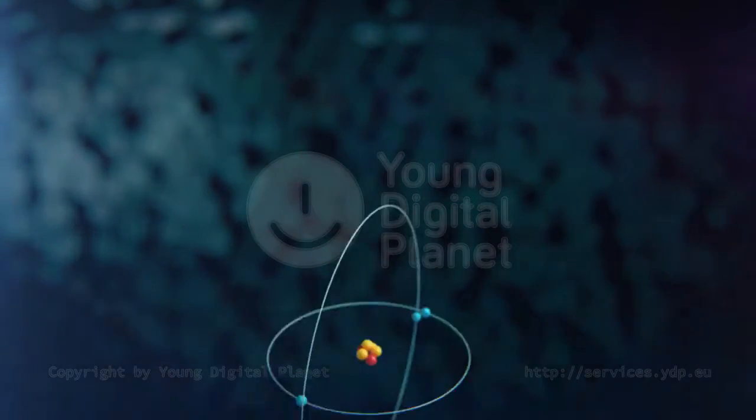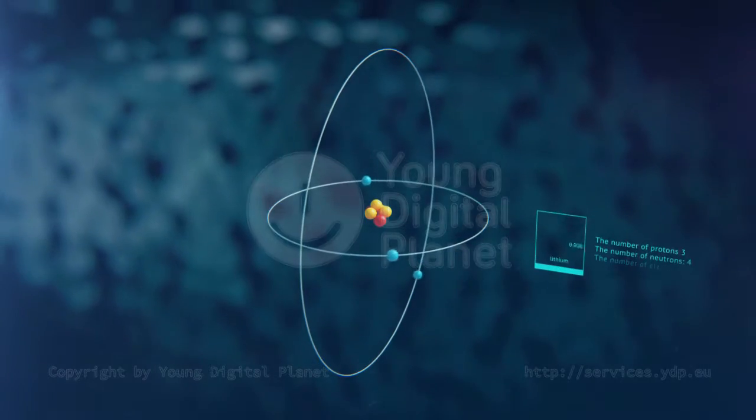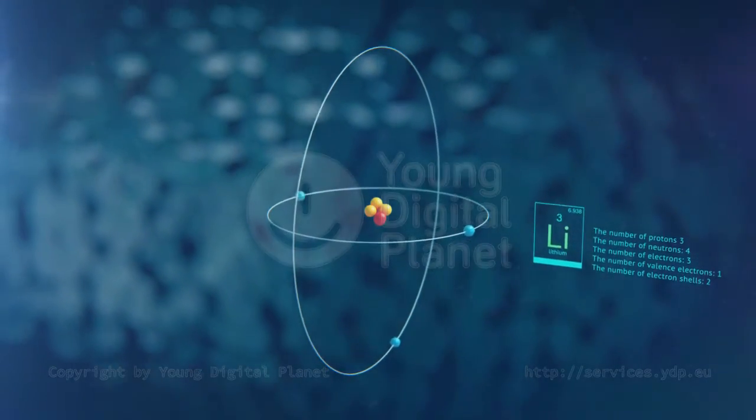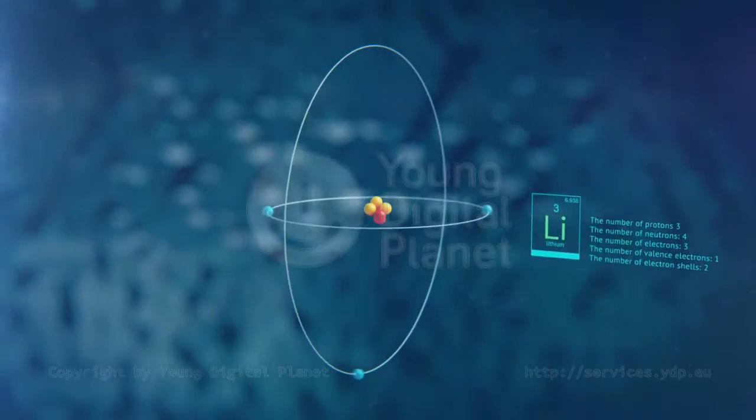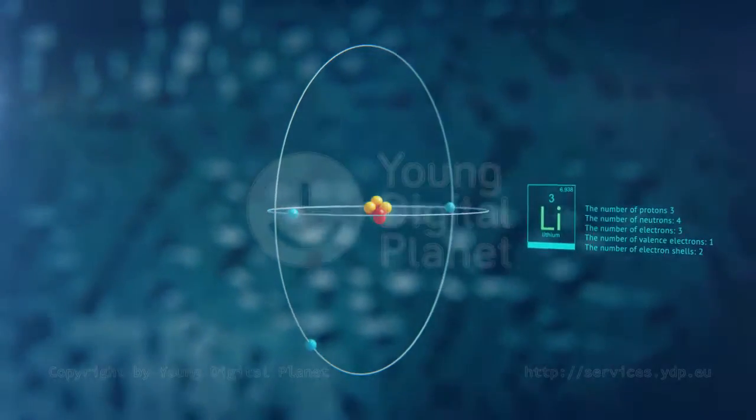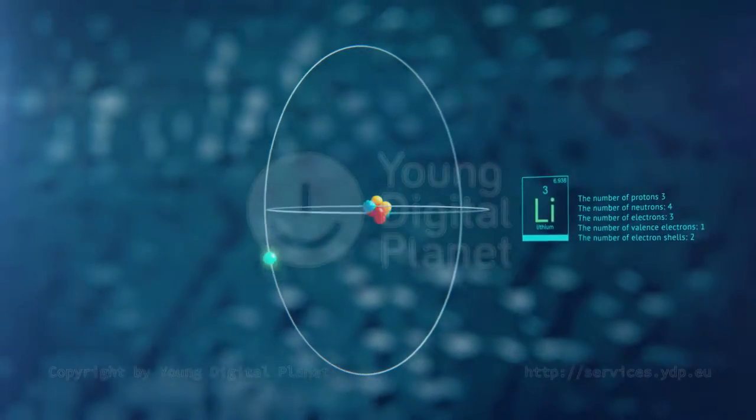A lithium nucleus consists of three protons and four neutrons, orbited by three electrons on two electron shells. Lithium has one valence electron.